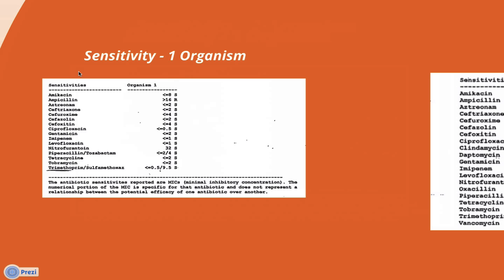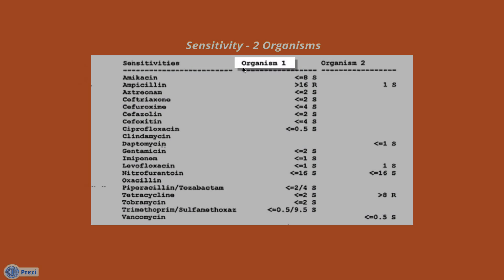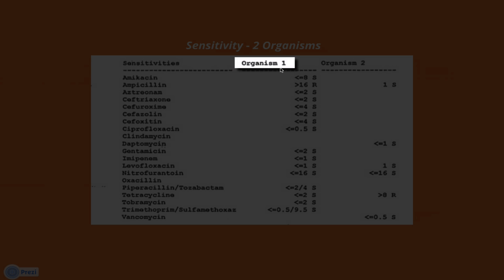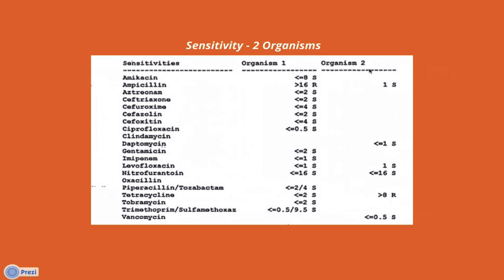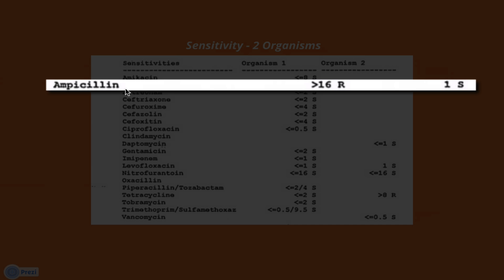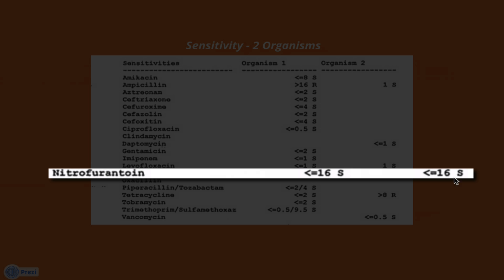Let's take a look at another example with two organisms. Here we have E. coli as organism number one, and Enterococcus as organism number two. The challenge when you have multiple organisms is to find an antibiotic that is going to be effective for both organisms. Here you'll notice that the E. coli is resistant to ampicillin, but the Enterococcus is sensitive. So you'll need to find one that's sensitive for both. Nitrofurantoin looks like it's going to be effective because the E. coli is sensitive to it, and so is the Enterococcus.